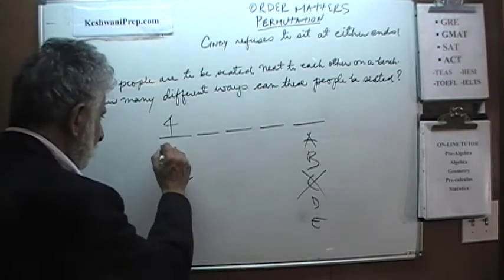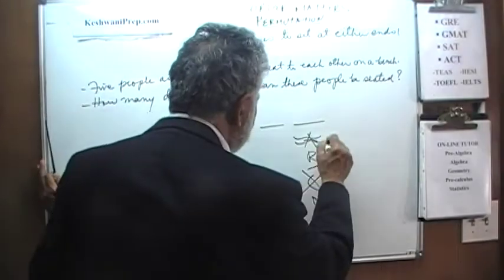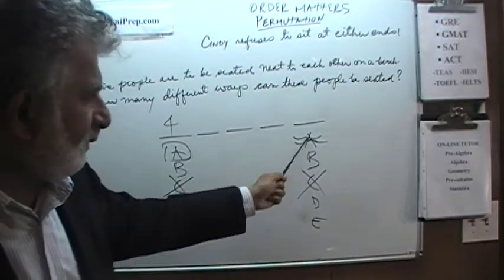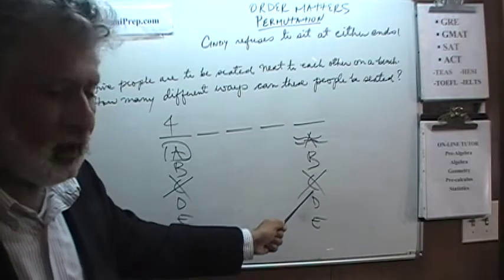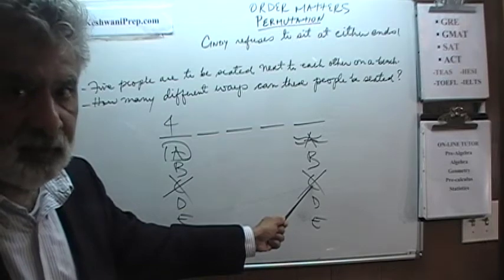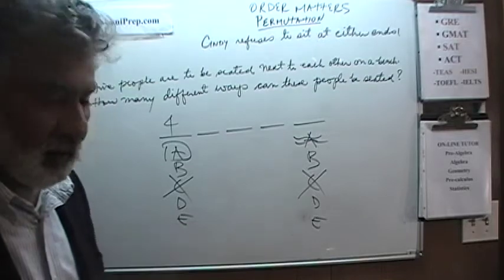As you can see I crossed them out in a different way. That is my way of reminding myself that these two are crossed out for different reasons. C is crossed out because she does not want to sit at the end. She has not been seated yet, she just does not want to sit here. So keep that in mind.